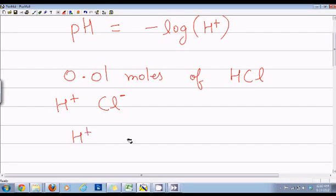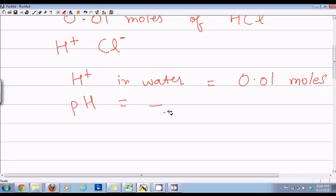Our concentration of H+ ions in water is equal to 0.01 moles. So now if you have to find the pH, we will say pH is equal to negative log of 0.01. And as we have learned in the previous lesson, log of 0.01 is negative 2.